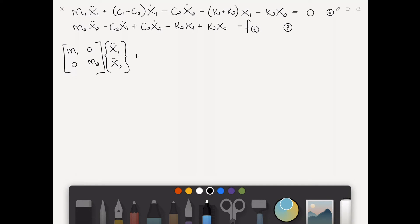Plus the damping matrix: c1 plus c2, minus c2, minus c2, plus c2, multiplying the velocity vector x1 dot, x2 dot.